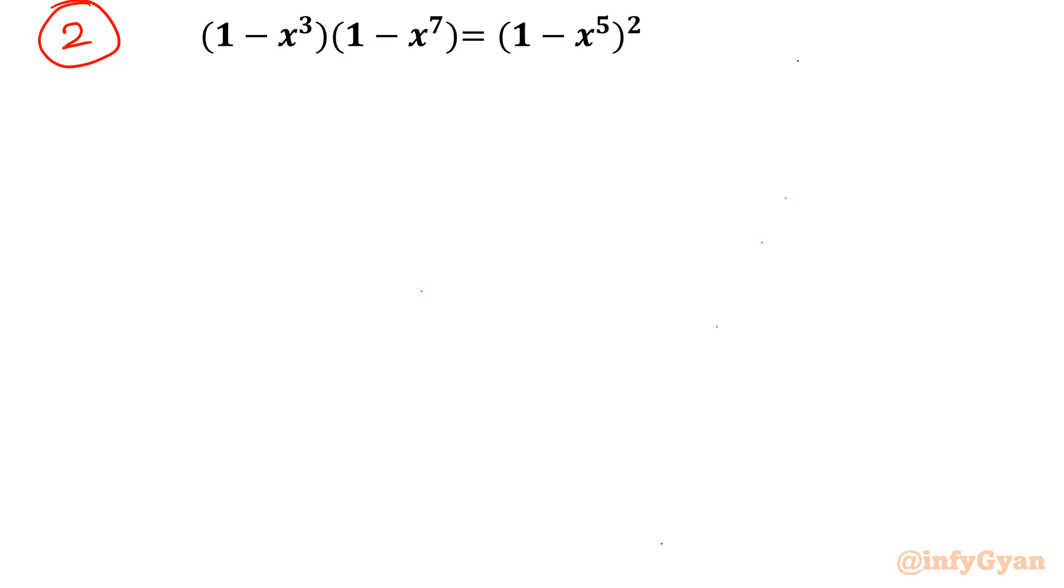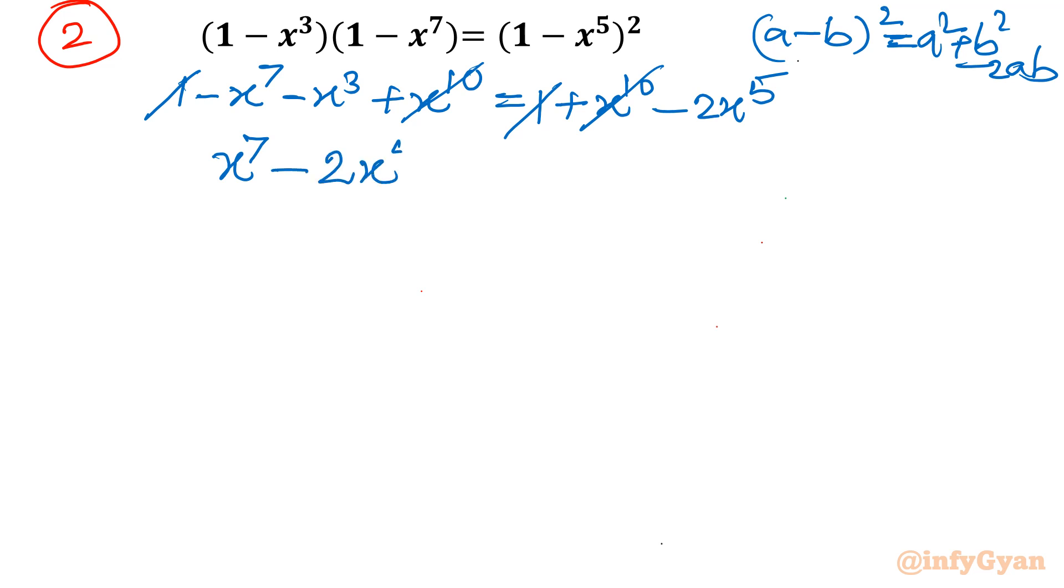Let us expand. So 1 times 1 minus x power 7. So I will write 1 minus x power 7. Then minus x cube times 1 minus x power 7. So minus x cube plus x power 10. Now right hand side. A minus b whole square. A minus b whole square is a square plus b square minus 2ab. Let us apply. A square plus b square minus 2x power 5. Now I can see 1, 1 will be over. I can see x power 10 is also over. Now what is left? Take all the terms to the right. So I will write x power 7 minus 2x power 5 plus x cube equal to 0.